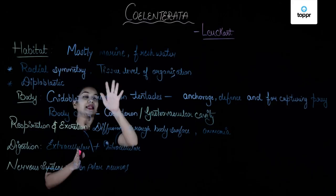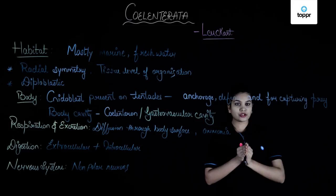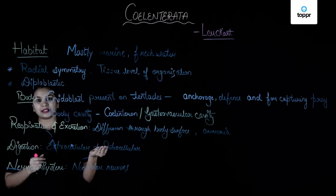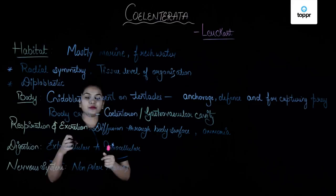They have a tissue level of organization, so a collection of cells is found arranged in simple tissues. Next, they are diploblastic, meaning there are two germinal layers present: the ectoderm and the endoderm.